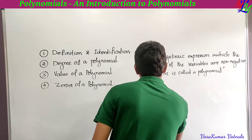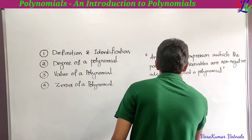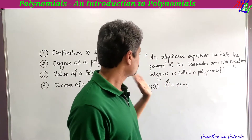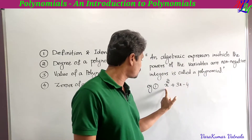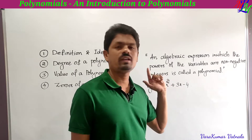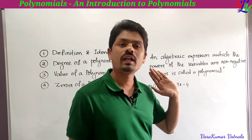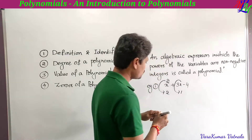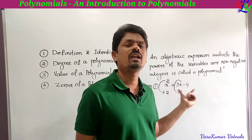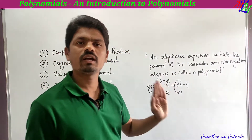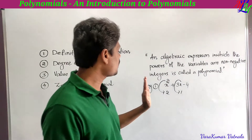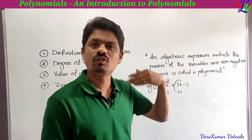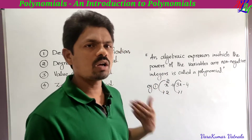Example 1: x² + 3x − 4. Here x is the variable. The powers of the variable are 2 and 1, which are non-negative integers. Non-negative integers are 0, 1, 2, 3, and so on. If the power is negative, it is not a polynomial. If the power is a fraction or rational number, it is also not a polynomial.